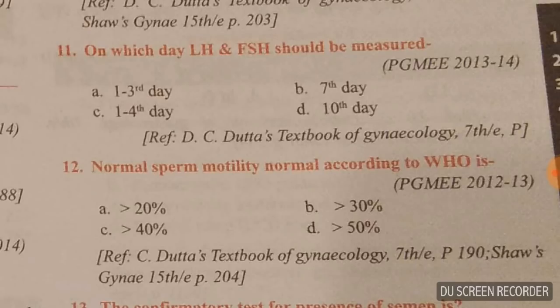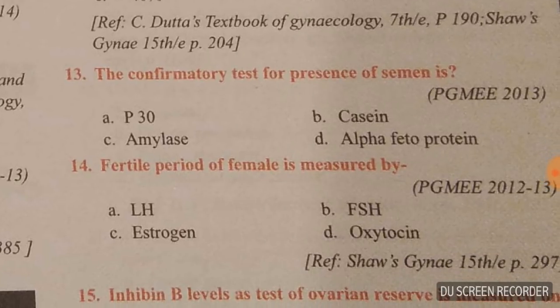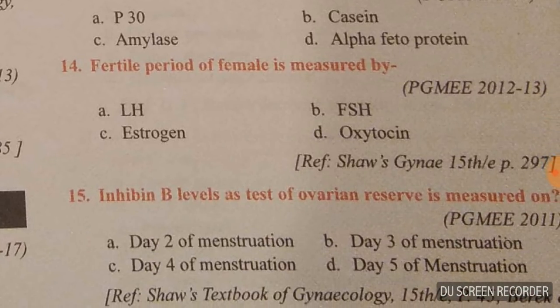LH and FSH should be measured on day one and day three. Question eleven answer confirmed. Question twelve answer is more than 50 percent. Question thirteen: the confirmatory test for presence of semen is P30 — answer is A.